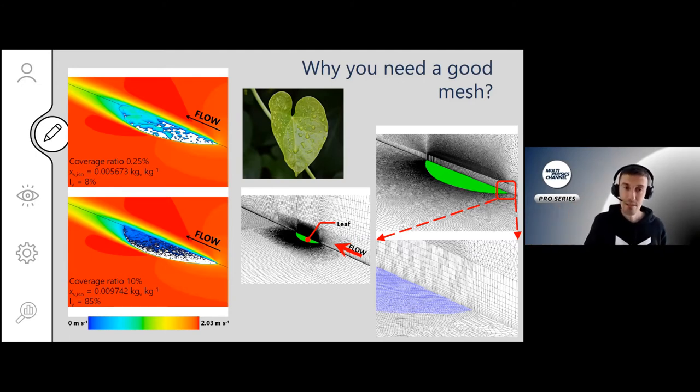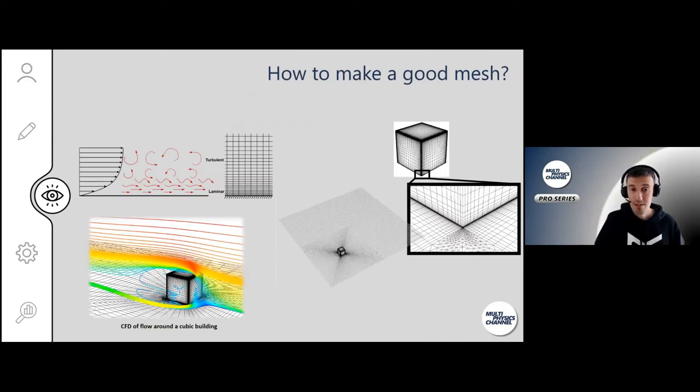We designed the grid in a very meticulous way to capture all these length scales. This gave us a very nice way to look at the evapotranspiration process for an entire leaf while modeling down to individual stomata. This is a very nice result of a lot of work put into building a mesh that can capture all these length scales, running in a stable and accurate way at the same time. That's why you need a good mesh.